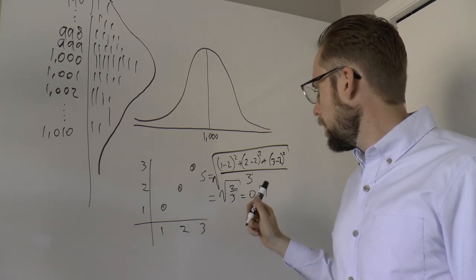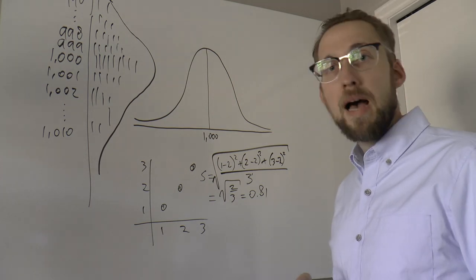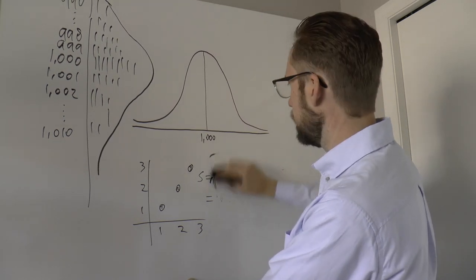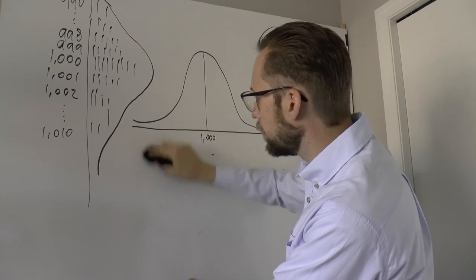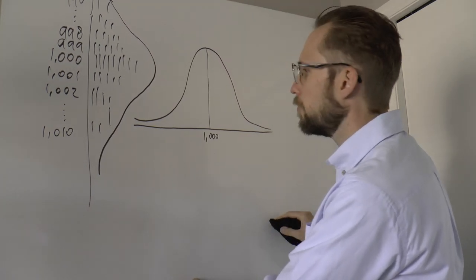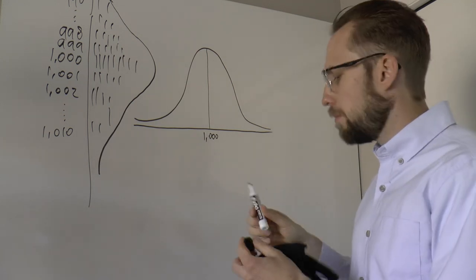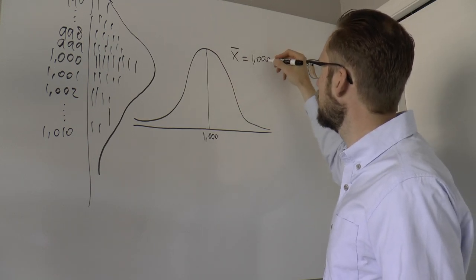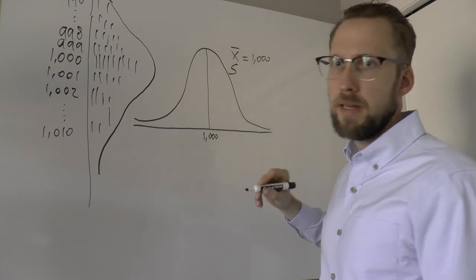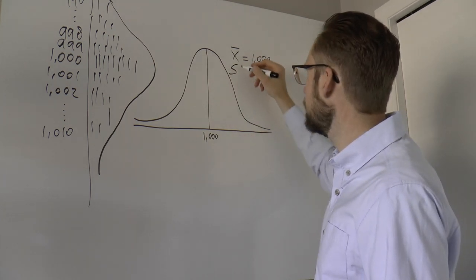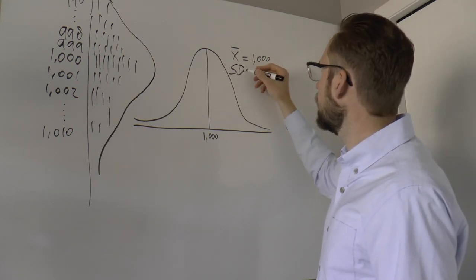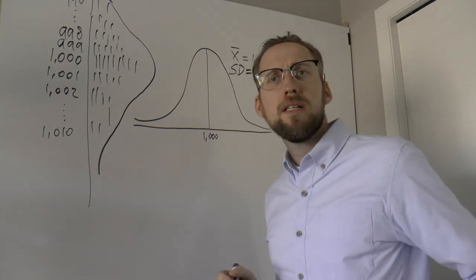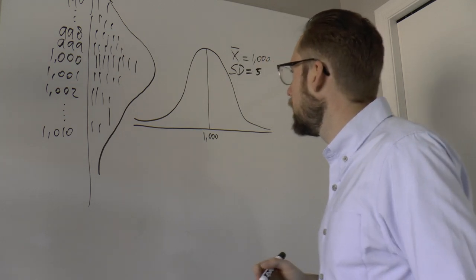Now let's stick with the milk cartons and keep things simple. I've computed the mean and standard deviation for my 1000 cartons. The mean (x-bar) is 1000 milliliters, and the standard deviation (SD) is 5 — I'm making that up so we have a round number. So why is this normal distribution so interesting?